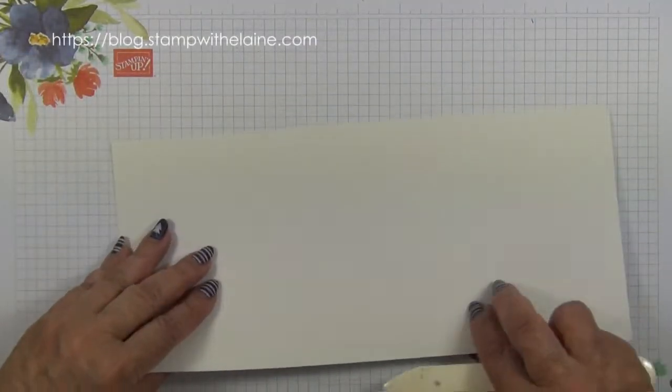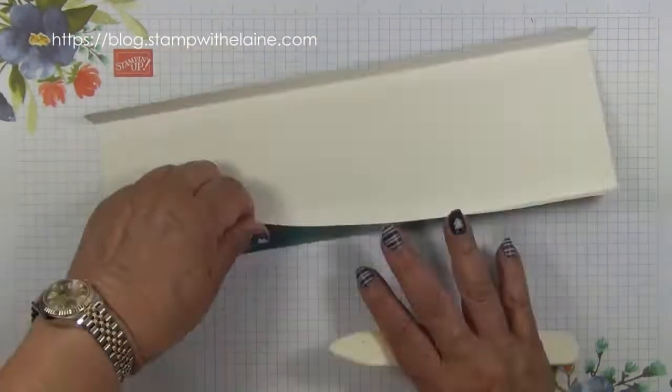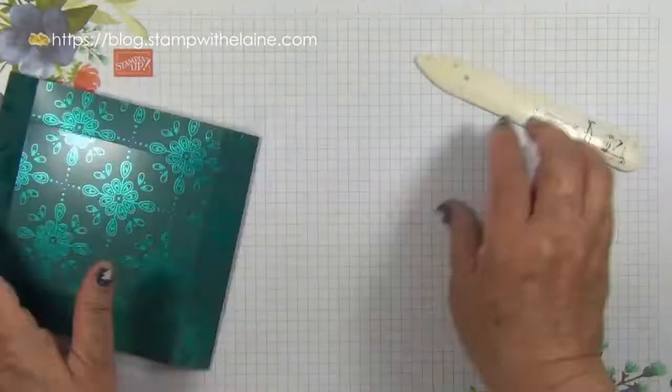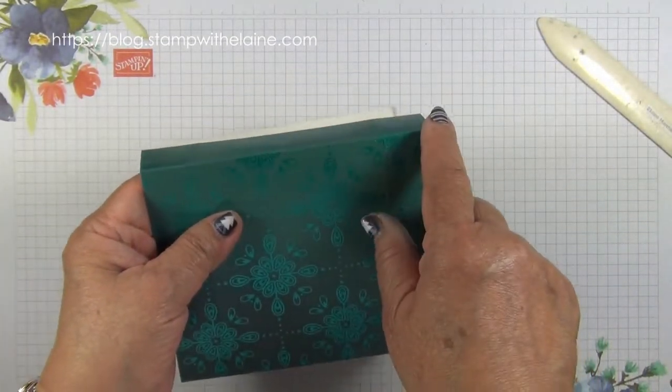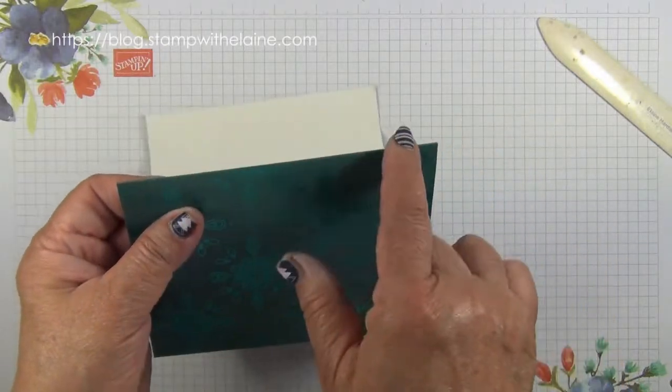Now we want to burnish our score lines. You don't want to press too hard on your cardstock, the foiled side, in case it cracks the paper.